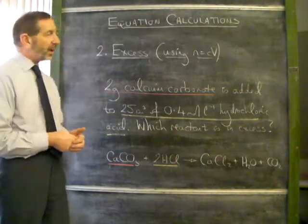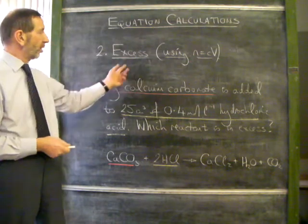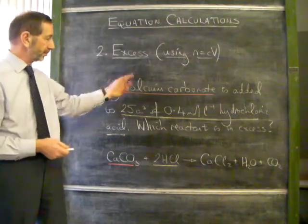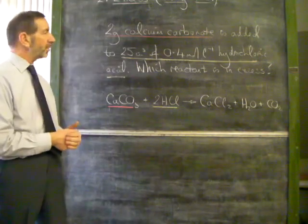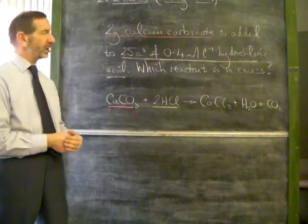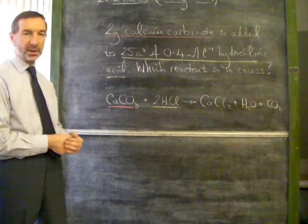Here's another kind of calculation based on an equation. This time the question is, which reactant is in excess? It says, 2 grams of calcium carbonate is added to 25 cubic centimeters of 0.4 molar hydrochloric acid. Which reactant is in excess?